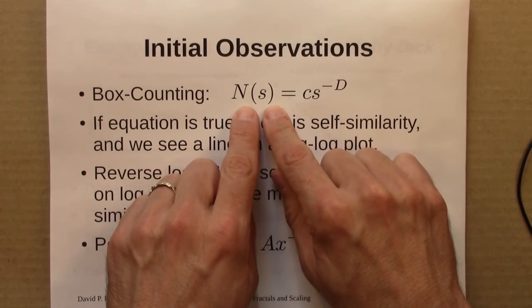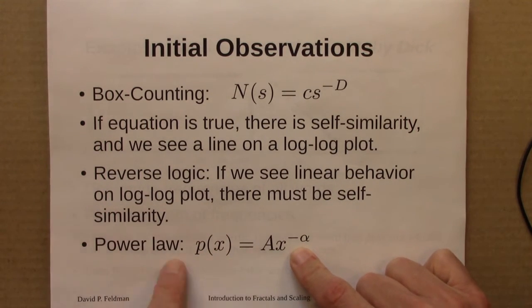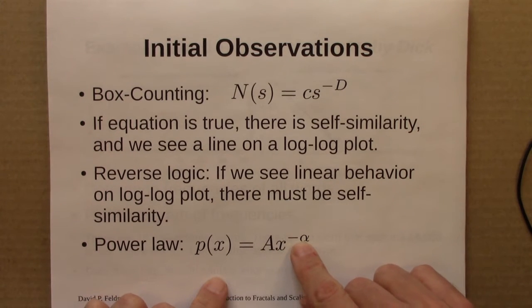And we took this functional form, and I just wrote it in a different way, and said I call this a power law. It's x raised to some exponent, so it's the variable downstairs raised to a power, and then some constant out here.